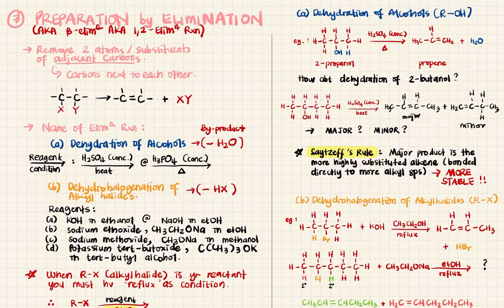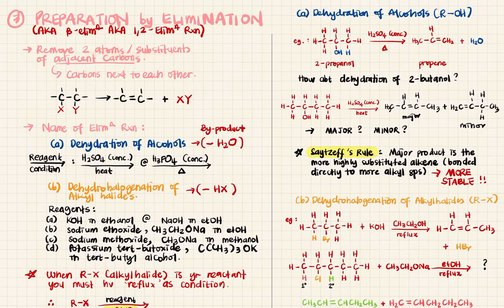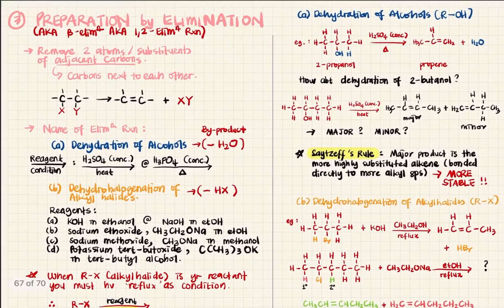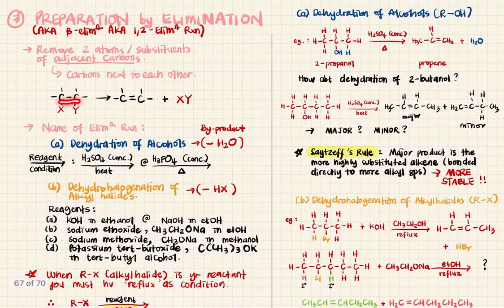We're going to continue with the third part: preparation by elimination reaction. In order to prepare an alkene with a carbon-carbon double bond, we must perform elimination. This means you will be removing two atoms or substituents from adjacent carbons. In this general equation, these two carbons are next to each other, and we are going to remove X and Y to get our alkene and byproduct XY.